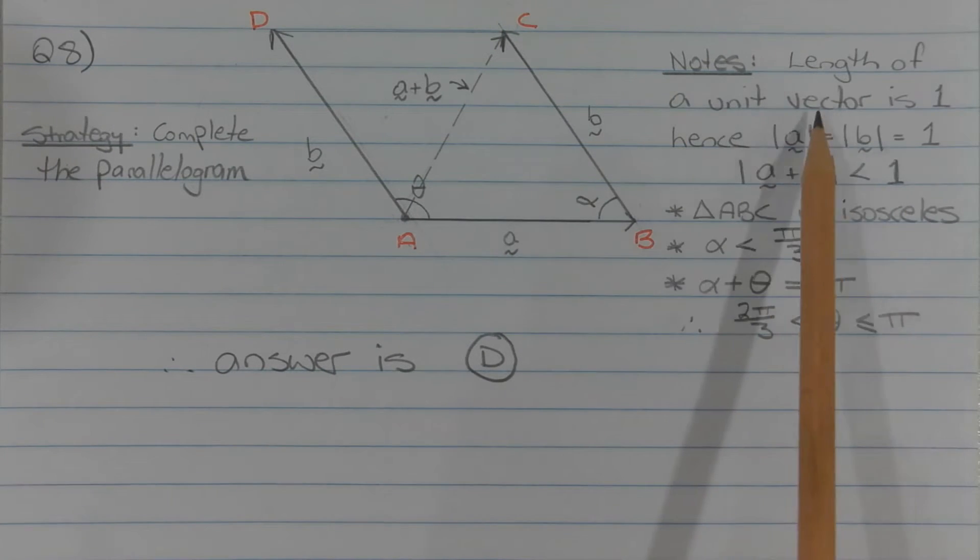Note that the length of a unit vector is 1, and we're given that vector A and vector B are both unit vectors. So AB equals BC, which equals 1. We're also given that the vector sum is less than 1.